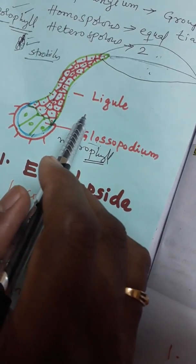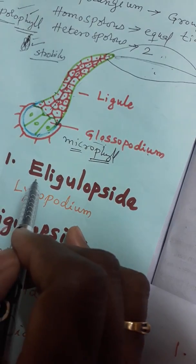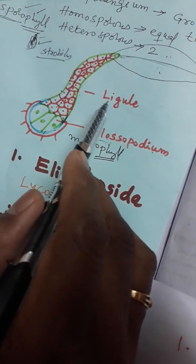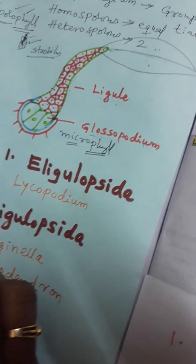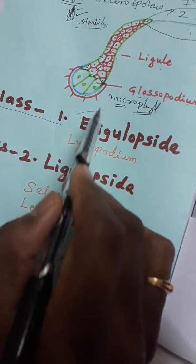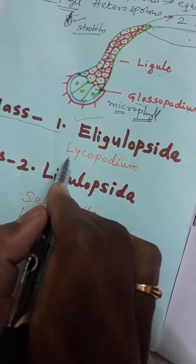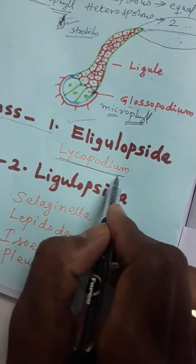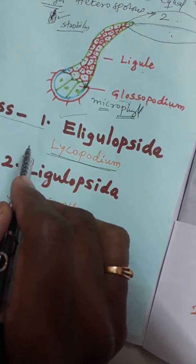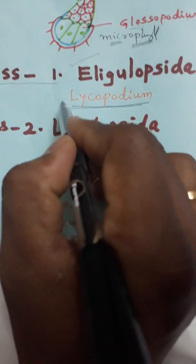Some plants have a ligule and some do not. Based on the presence of ligule, Lycophyta is divided into two classes. One is class Eligulopsida, meaning there is no ligule. The example is order Lycopodiales, genus Lycopodium — so in Lycopodium, there is no ligule.